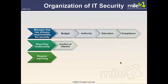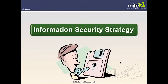Organization of IT security. The manager with primary responsibility for security thinks about budget — that's part of why we want management on board, because they approve the budget and have the authority. We look at education and compliance. When examining the reporting structure, we want to ensure there are no conflicts of interest where fraudulent activity could be hidden. Regular reporting goes without saying.